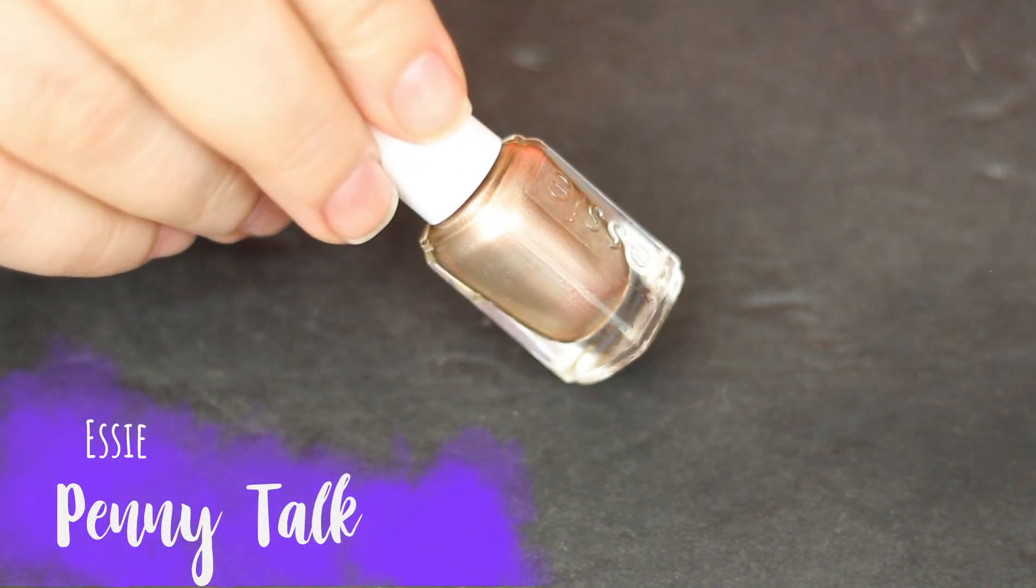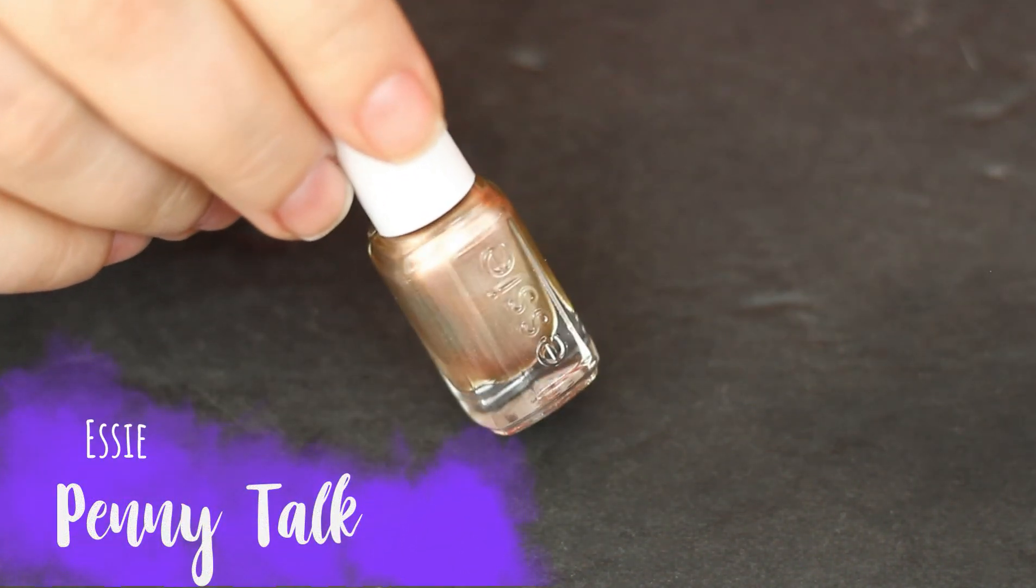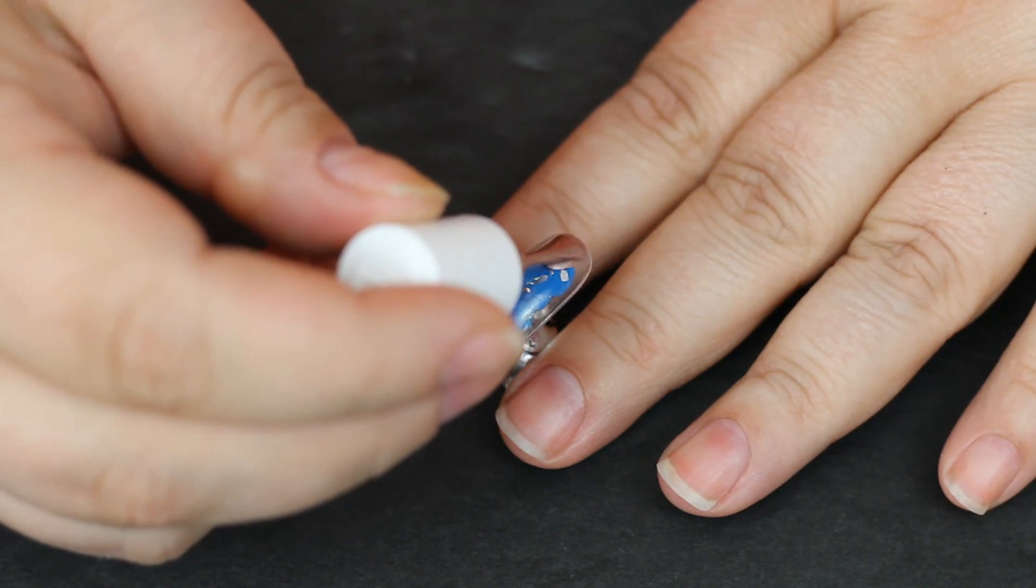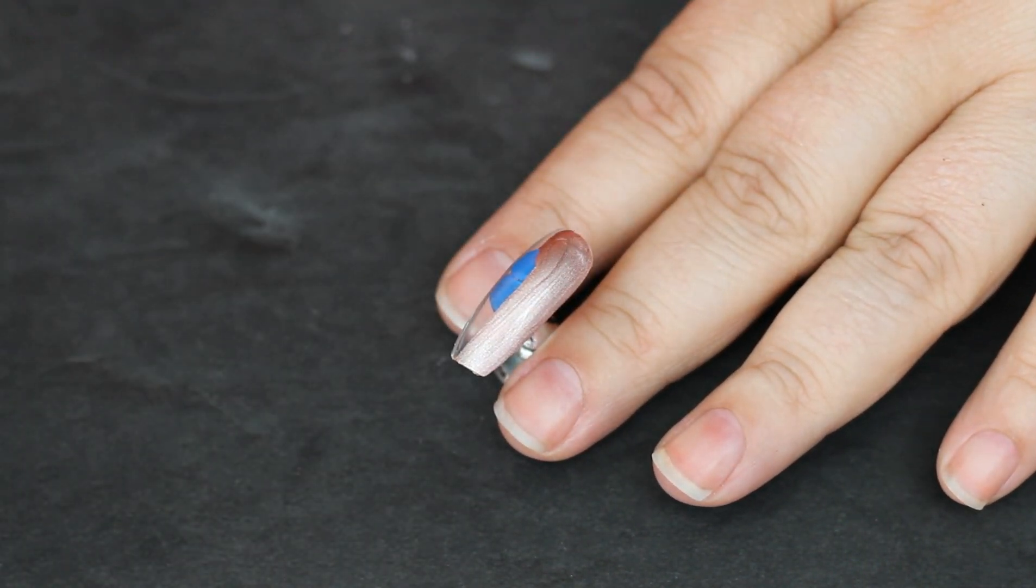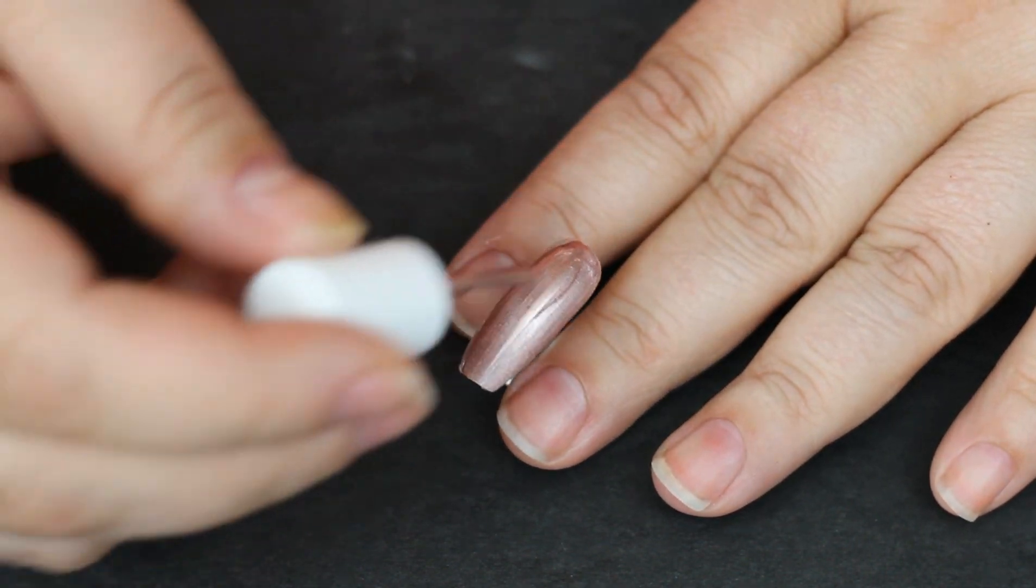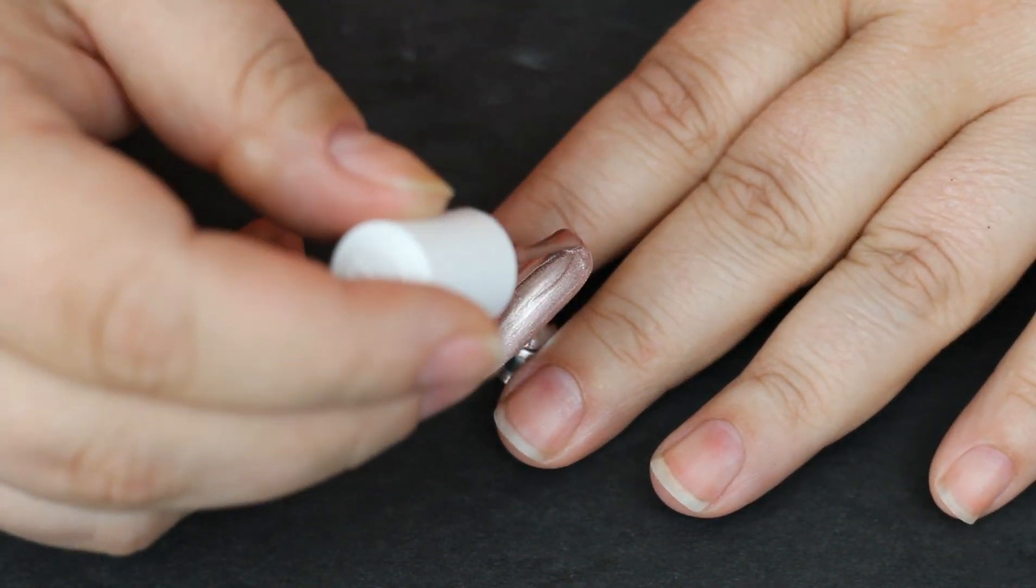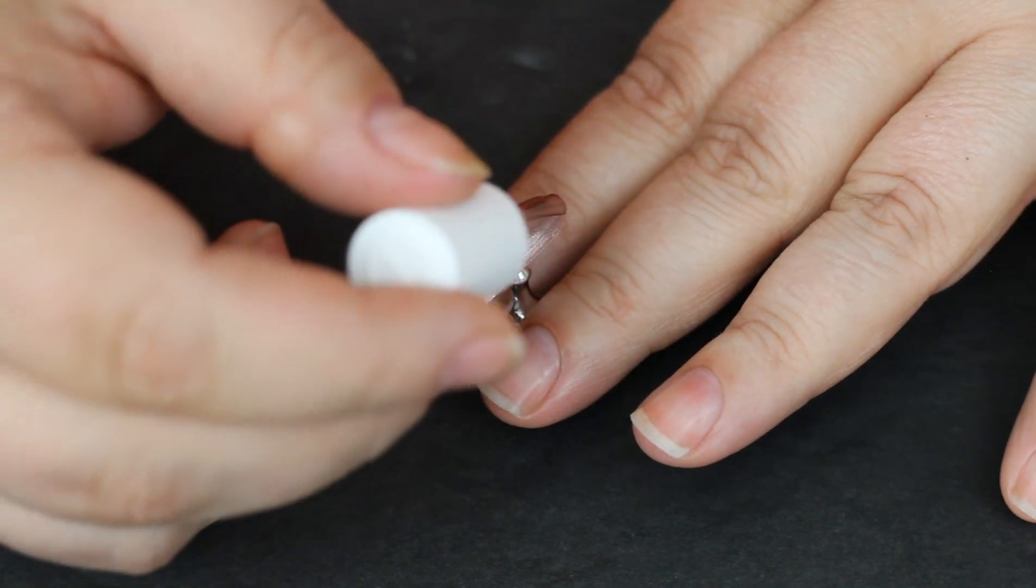And last but not least, we have what would have been my favorite in the collection if the white Blanc had not been in there. Penny Talk. It's like if copper and rose gold had a baby. And it's this beautiful little delicate angel. I love this.